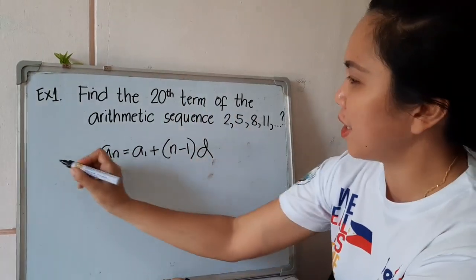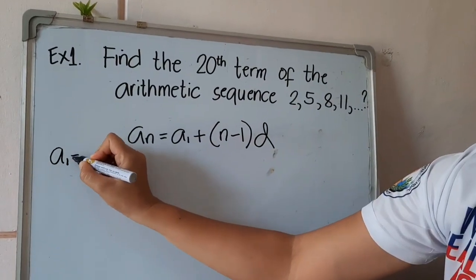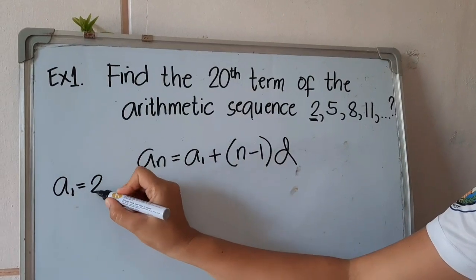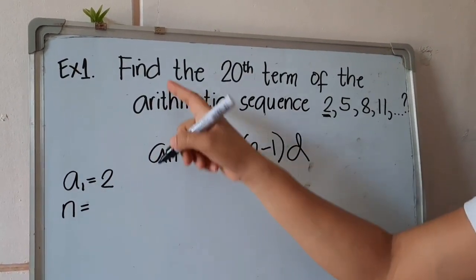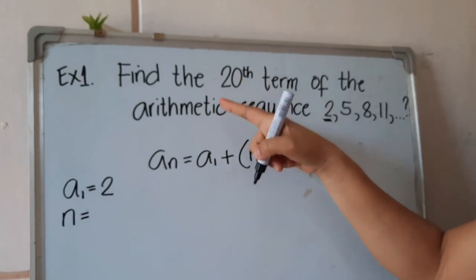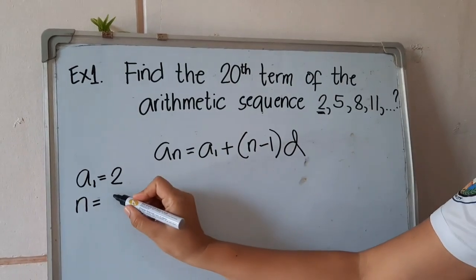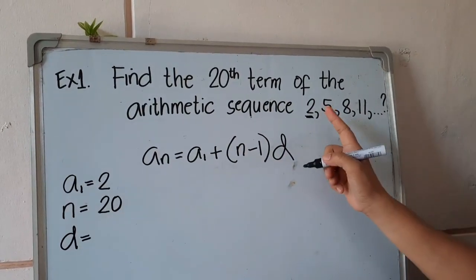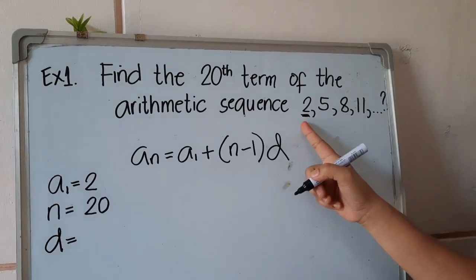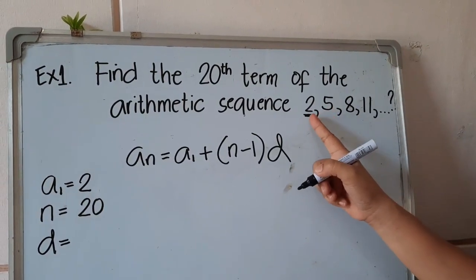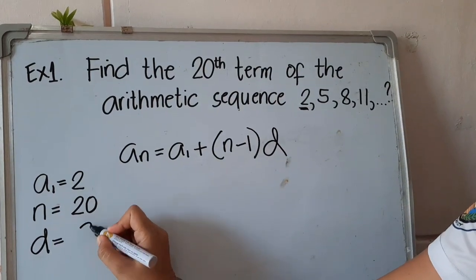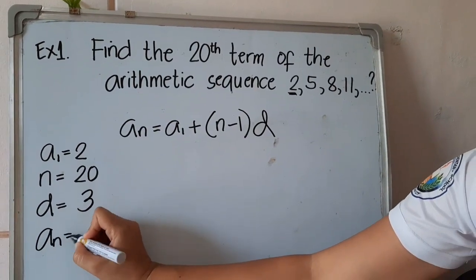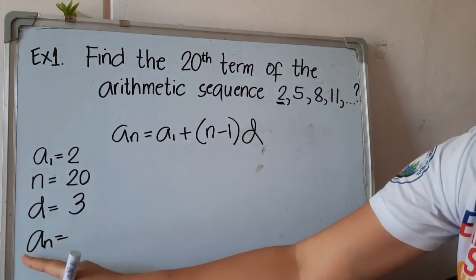From the given, a_1 refers to our first term, and our first term in the sequence is 2. Our n refers to the number of terms — our problem asks for the 20th term, so n = 20. Our common difference d is the difference from the second term to the first term: 5 minus 2 equals 3, so d = 3.